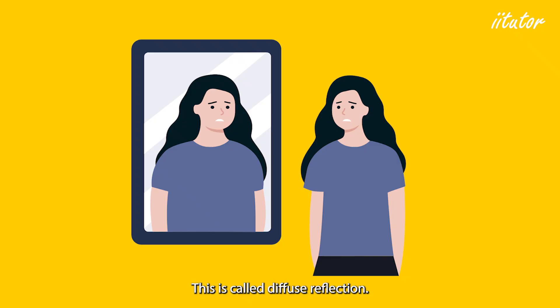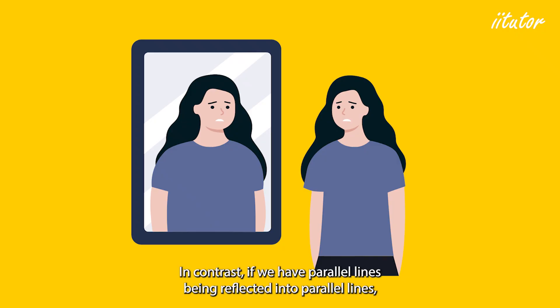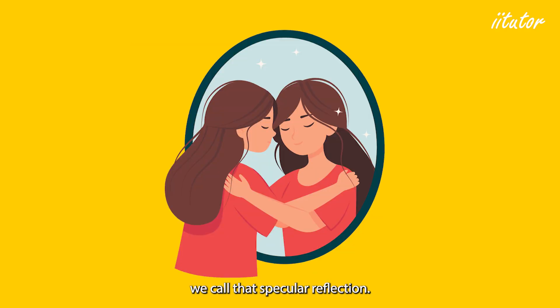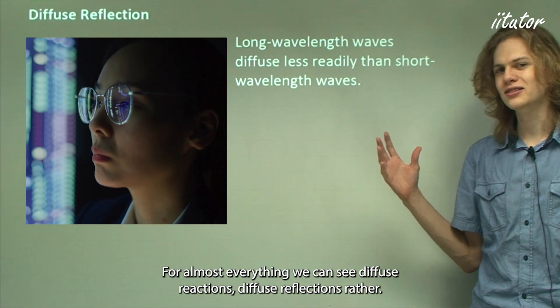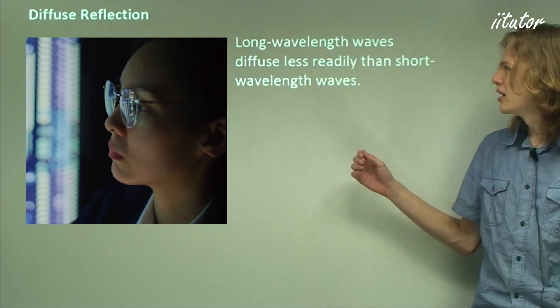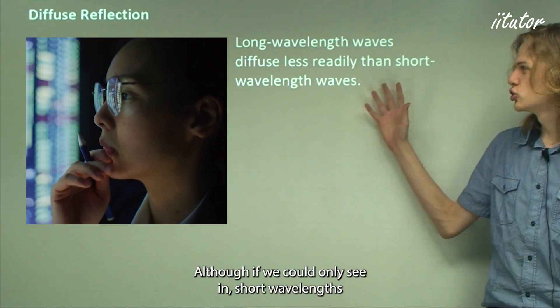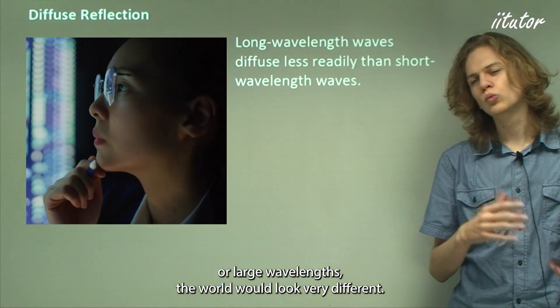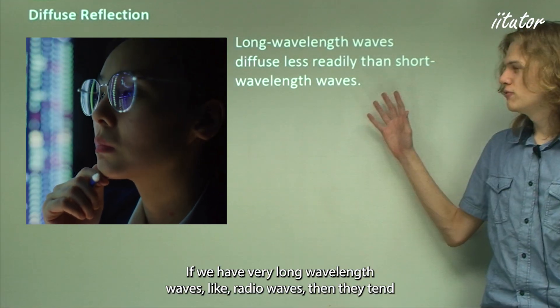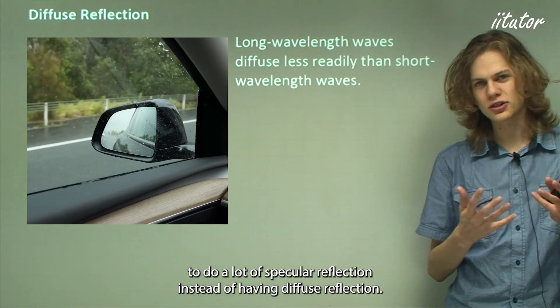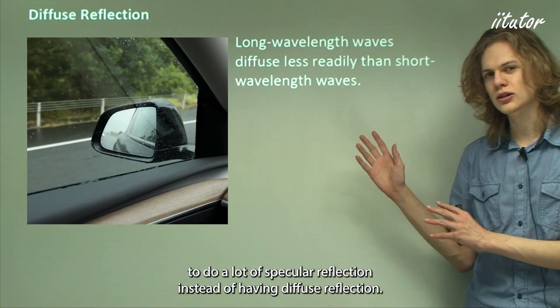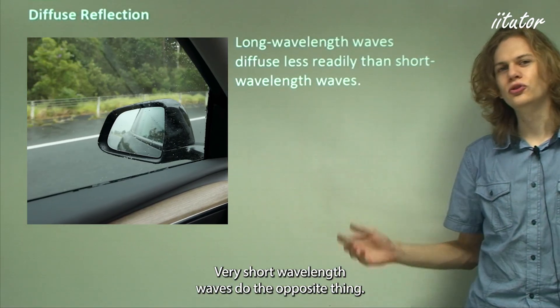This is called diffuse reflection. In contrast, if parallel lines are reflected into parallel lines we call it specular reflection. For almost everything we can see around us, we get diffuse reflections. If we could only see in very long wavelengths like radio waves, they tend to produce specular reflection instead. Very short wavelength waves do the opposite.